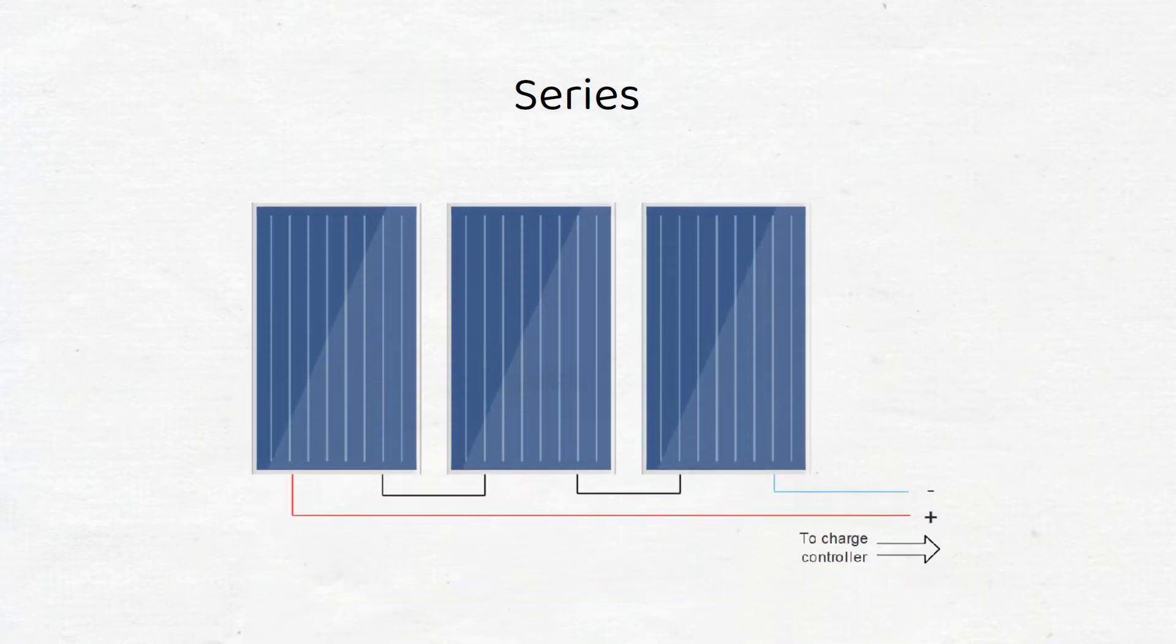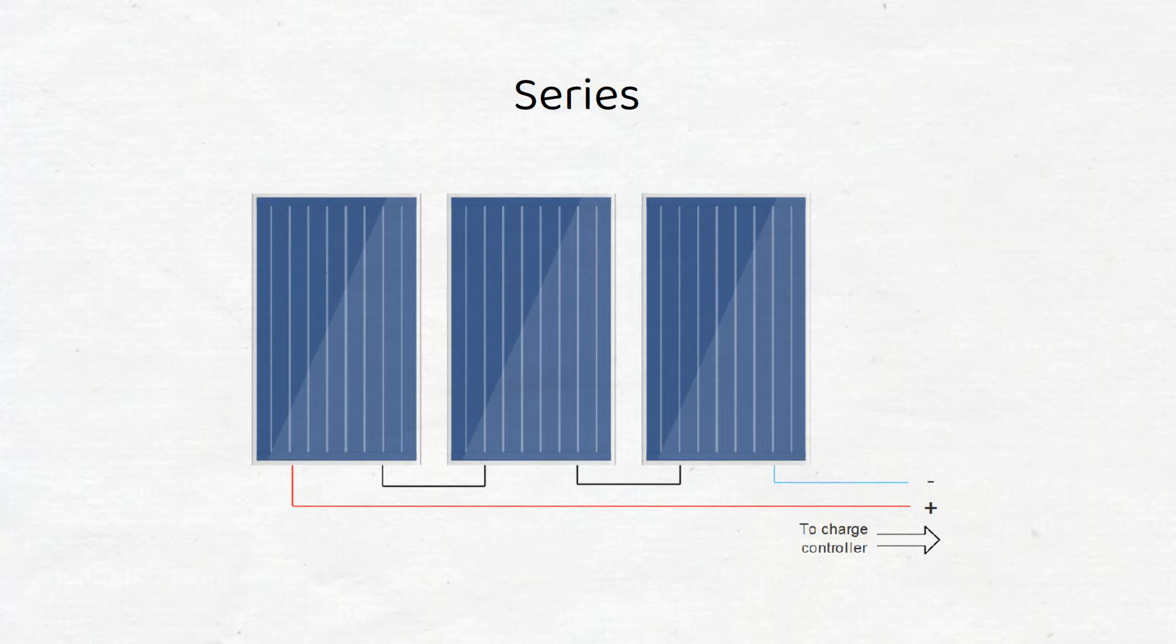If you want to wire solar panels in series, you connect them the same way as a light circuit. You can look at this diagram how it's done. If you're wiring in series, the volts are added up and the current stays the same. That's why you don't need to use a thicker cable.